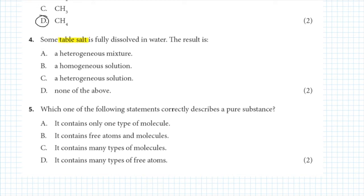Question 4 says: some table salt is fully dissolved in water. The result is: A) a heterogeneous mixture, B) a homogeneous solution, C) a heterogeneous solution, or D) none of the above.